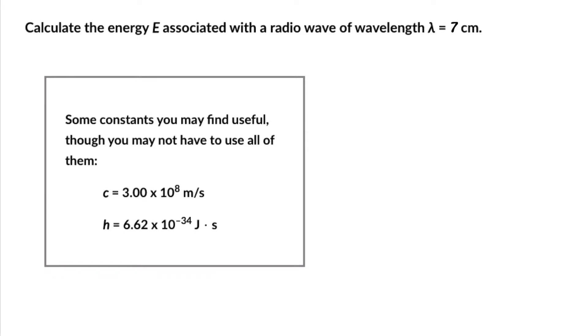In this example we'll be calculating the energy E associated with a radio wave of wavelength λ = 7 centimeters. Anytime we need to find energy associated with a wave given its wavelength or frequency, we would use E = hc/λ since this is the equation that relates the energy with the wavelength that's given.